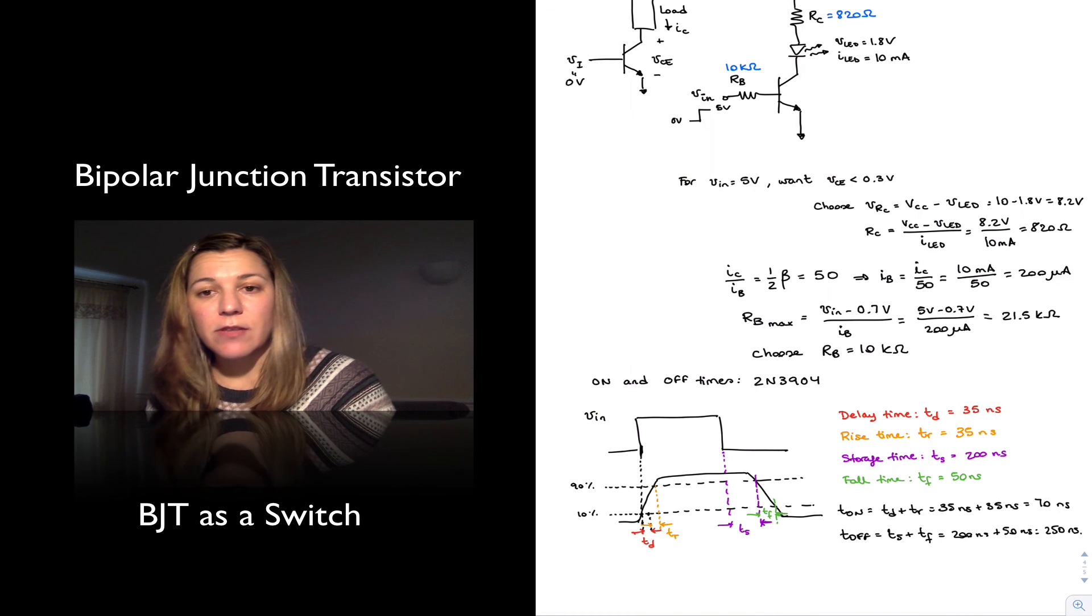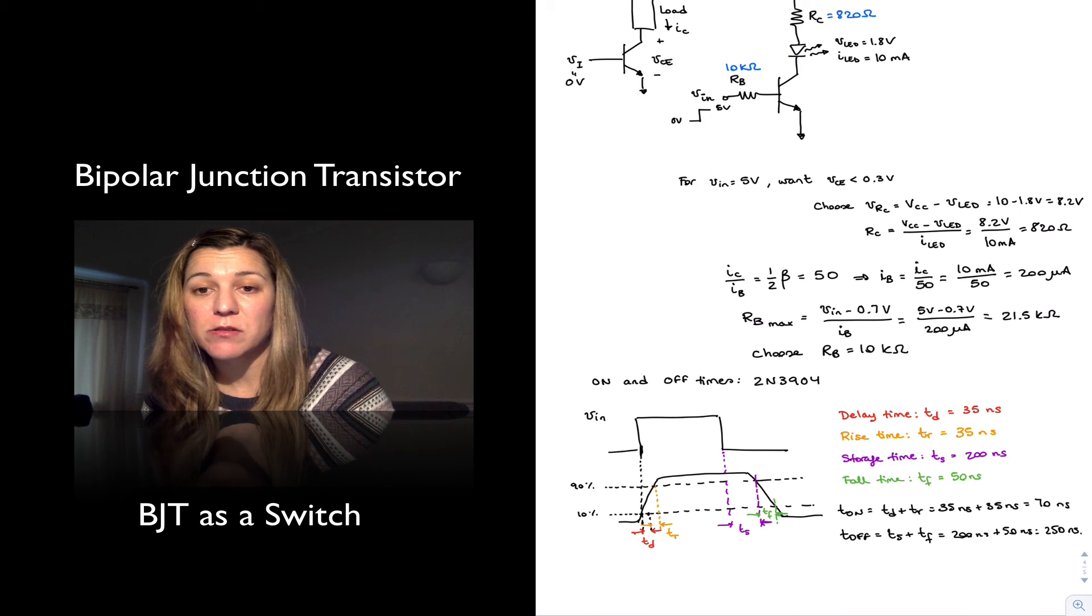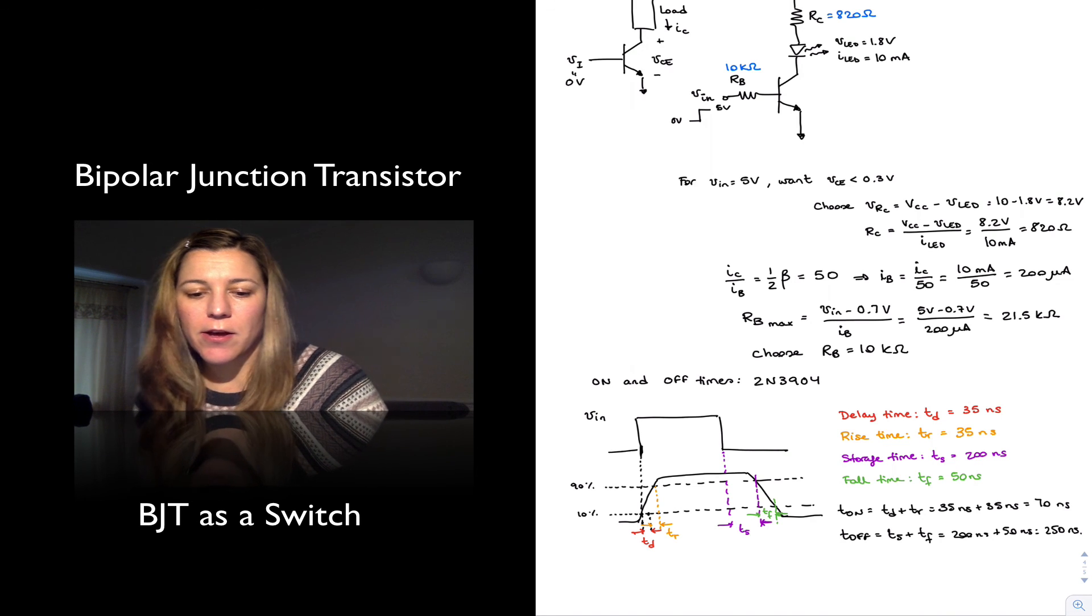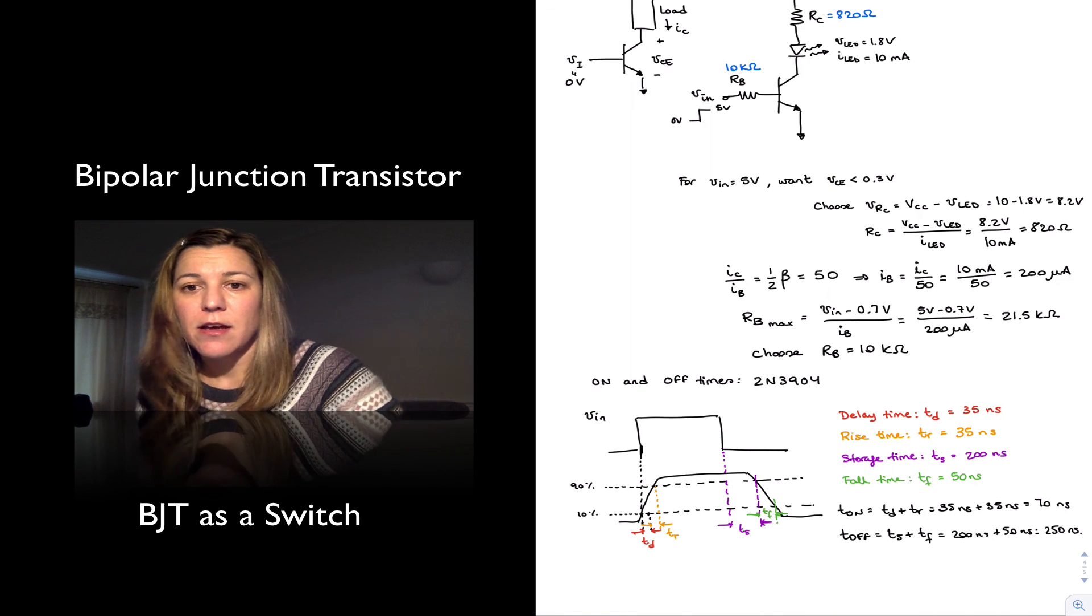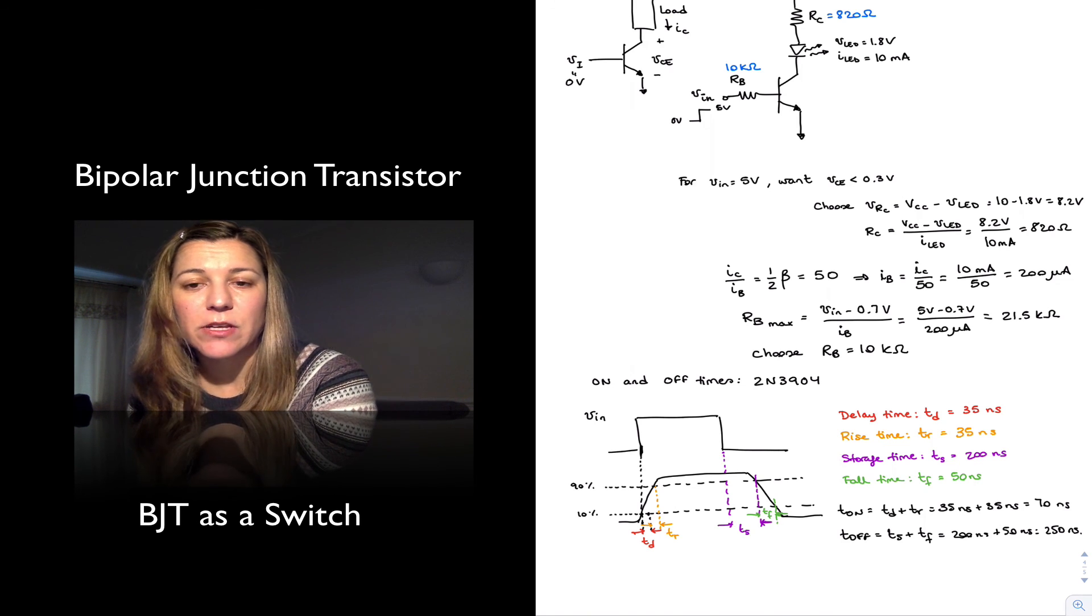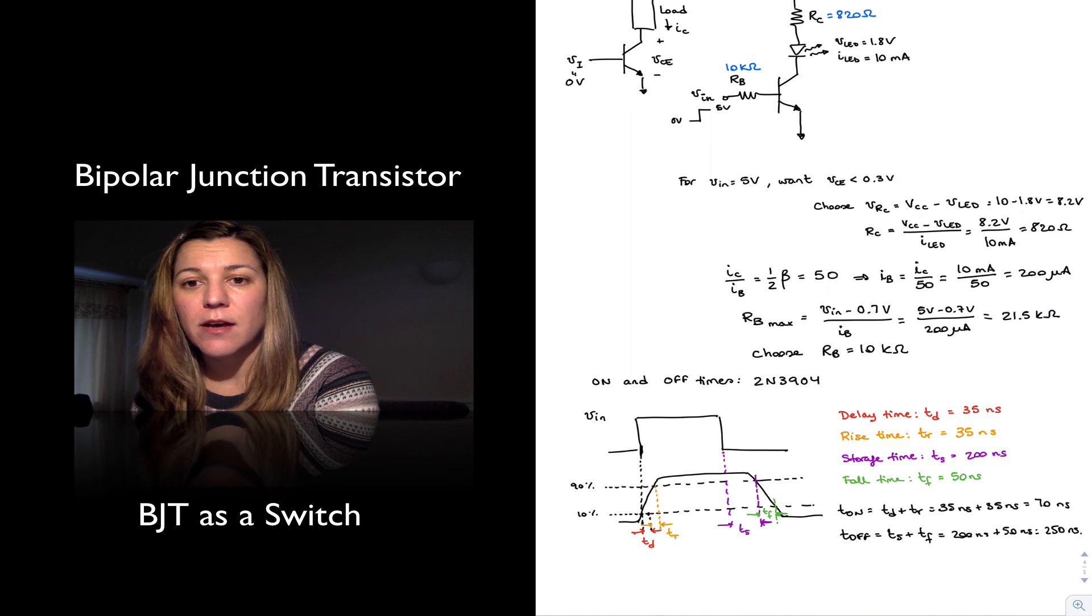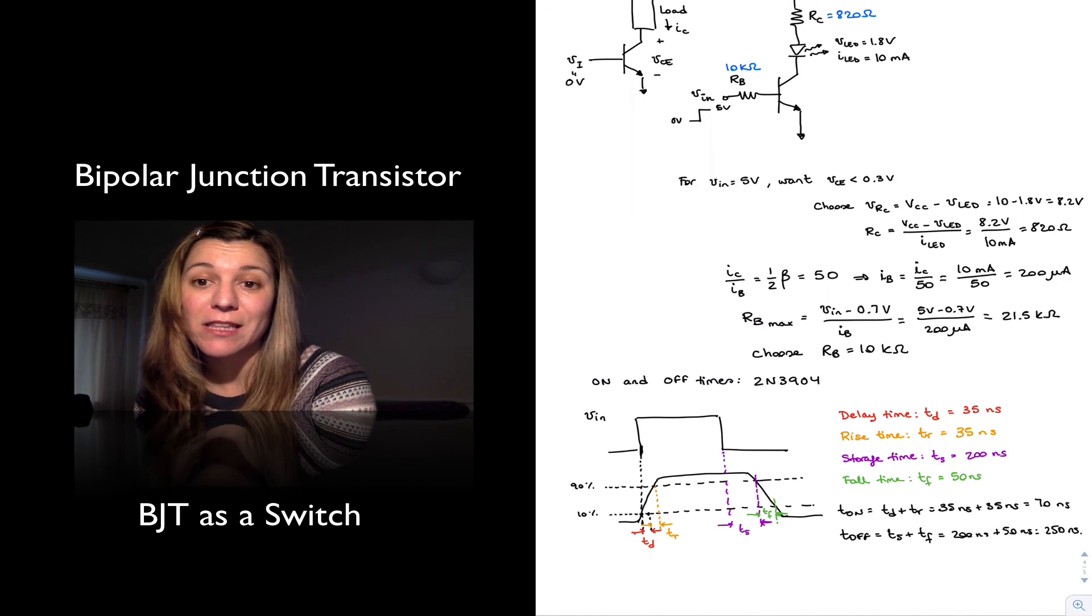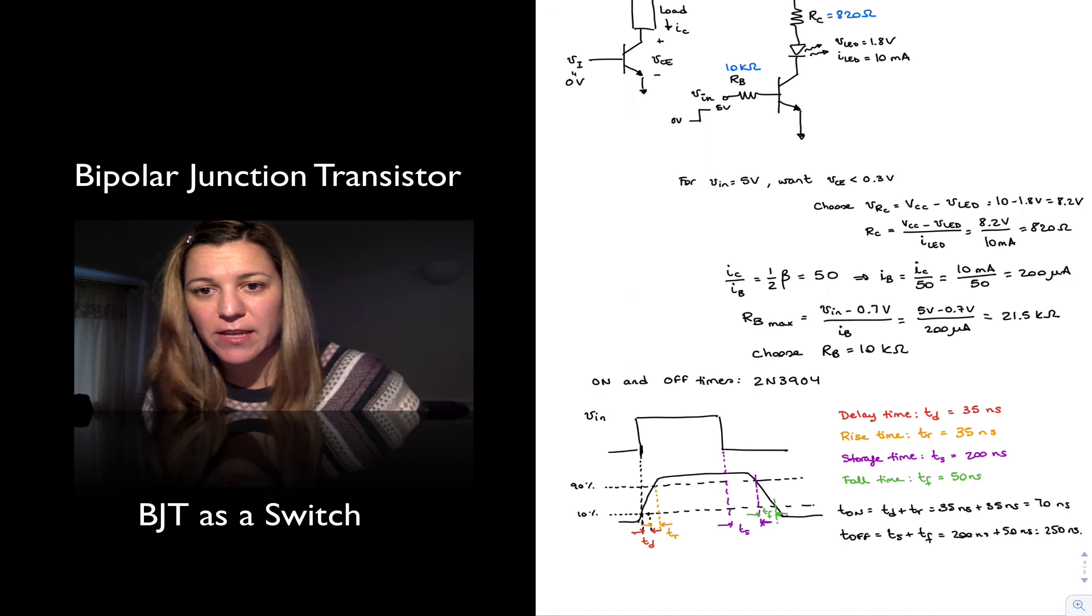And that's it. That's again just one switching application for you to see how the transistor will be used as a switch. It's perhaps the simplest application of transistors. You can perhaps take a look in the textbook at how the transistor can also be used to implement digital logic. The focus of this course, though, is going to be on using the transistor as an amplifier. And so in future activities, we're going to be exploring that behavior, and therefore we're going to be using the transistor in the linear region of operation, as opposed to saturation as we saw in this application. Thank you.